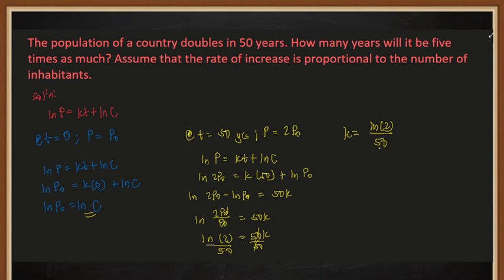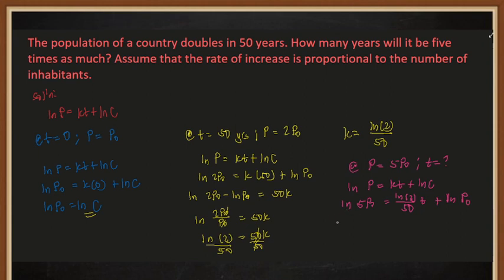Now let's solve the actual problem. We are trying to find how many years it takes for the population to be five times as much, so at P equals 5P₀, we are looking for T. Using our equation again, substituting: ln(5P₀) equals K times T plus ln(C), where K is ln(2)/50 and ln(C) is ln(P₀).